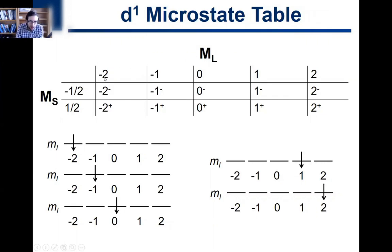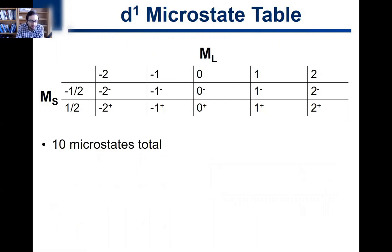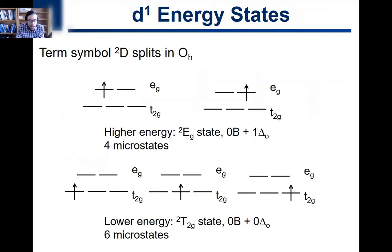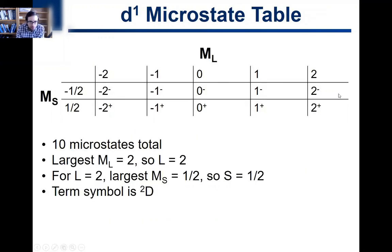We have M sub L values ranging from negative 2 to 2. With one electron, the lowercase M sub L values are the same as the uppercase M sub L values, and the lowercase M sub S values are the same as the uppercase M sub S values. That's our microstate table — 10 microstates total. The largest M sub L equals 2, so L equals 2. For L equals 2, the largest M sub S is one half, so S equals one half. The term symbol is doublet D, which accounts for all 10 microstates.